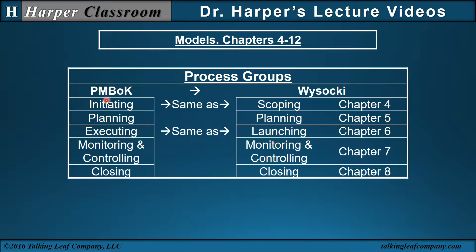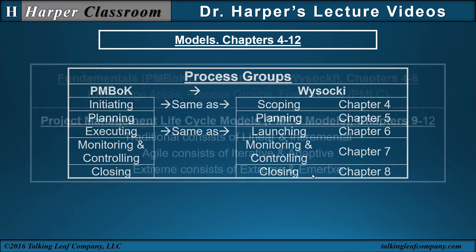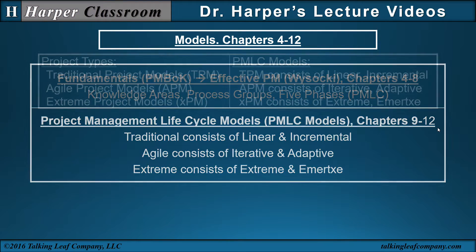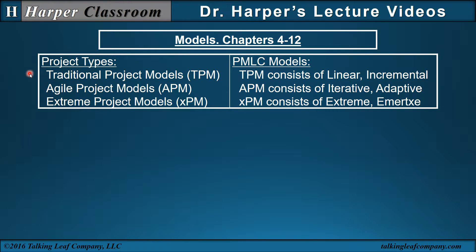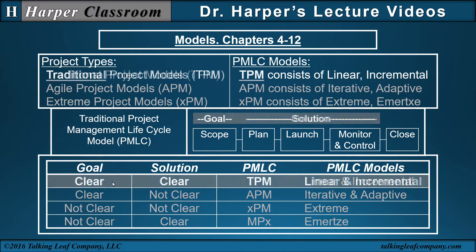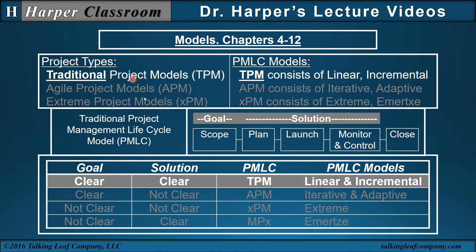Within these process groups, the concept of PMBOK is still contained even though the organization and order is different. Next are the Project Management Life Cycle Models, Chapters 9 through 12. Wysocki defines three project types: traditional, agile, and extreme. Within each project type are two Project Management Life Cycle Models. To distinguish the difference between project types and models, he uses the description of the goal and solution of a project. If the goal is clearly known and the solution is clearly defined, then that is a traditional type project with two Project Management Life Cycle Models.